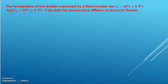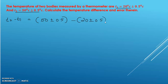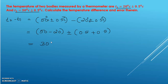Example: The temperatures of two bodies measured by a thermometer are T1 equals 20°C plus or minus 0.5°C, and T2 equals 50°C plus or minus 0.5°C. Calculate the temperature difference and the error therein. T2 minus T1 equals (50 plus or minus 0.5) minus (20 plus or minus 0.5), so the result is 30°C plus or minus 1°C.